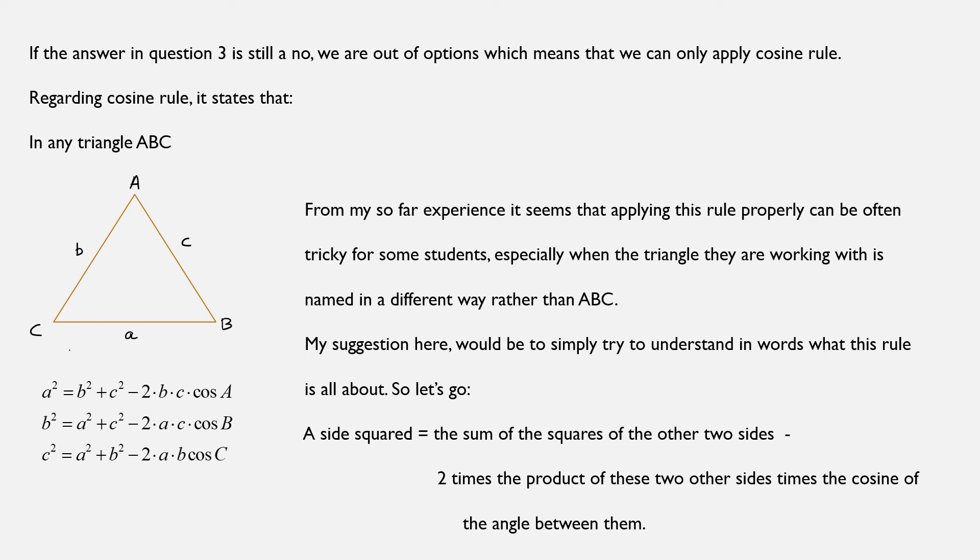So if we start by the side A, a squared will be equal to the sum of the squares of the other two, b squared plus c squared, minus two times the product of these two, 2bc, times the cosine of the angle between them, and that would be angle A. Similar for b, similar for c.